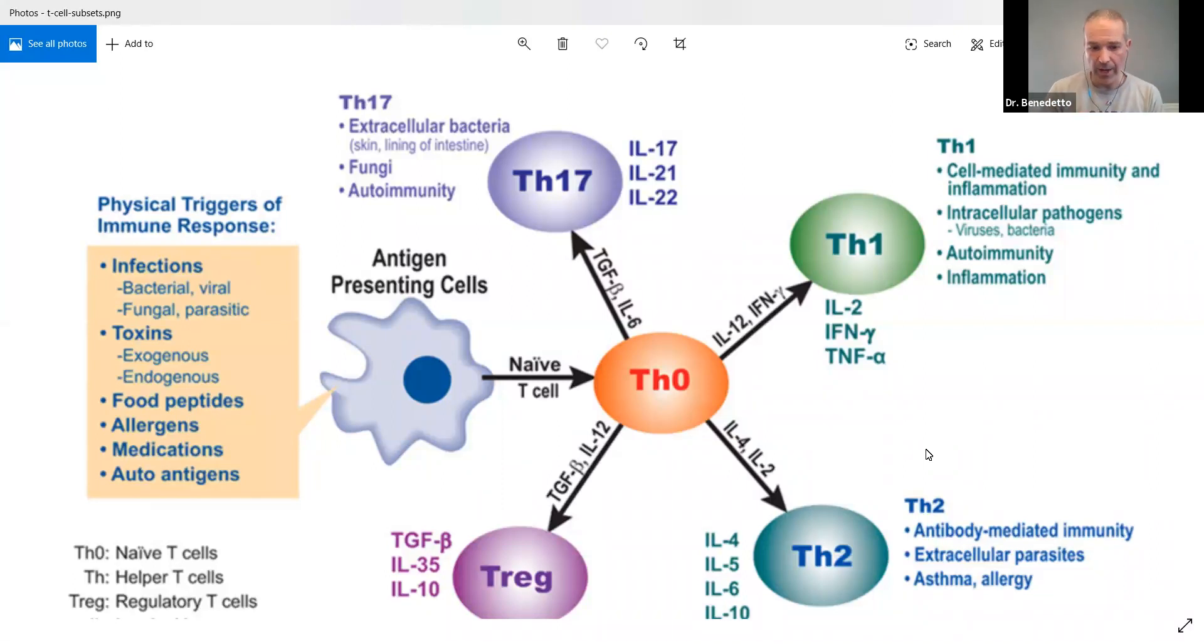If we go the Th2 route, you're going to see things like infectious problems. You're going to see things like fungal infections, Lyme disease, HIV, allergy, asthma, things like that. Now, why is this important?